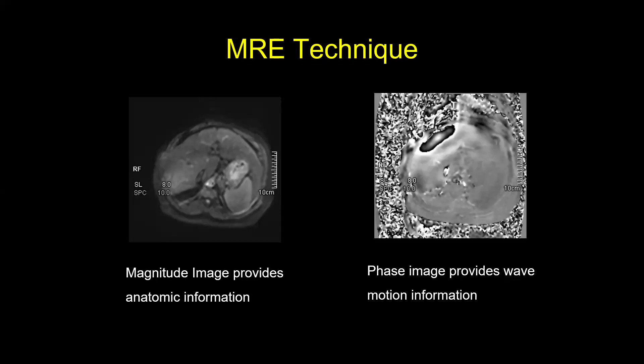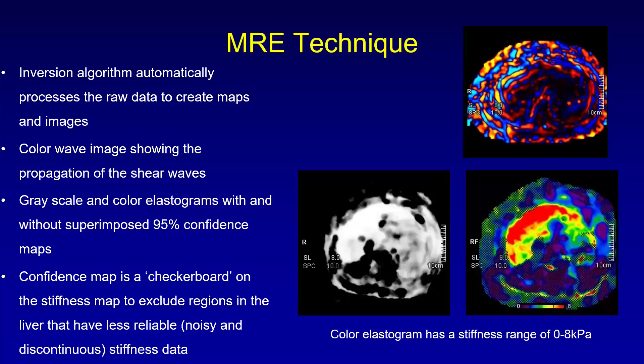Initially you get a magnitude image and a phase image. The magnitude image is an anatomical image — it tells you at each acquired section level what tissues are present, and that helps you plan the ROI. The phase image provides the wave motion information. This is the raw data. Once you have the raw data, the machine software uses an inversion algorithm to process it and create maps and images. The color wave image shows the propagation of the shear waves — that's an important image for analysis.